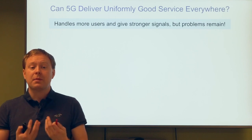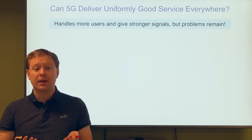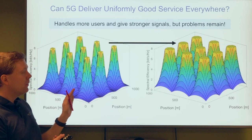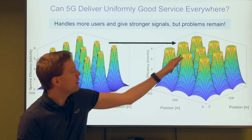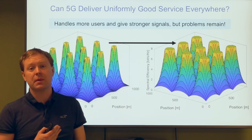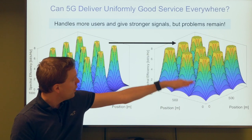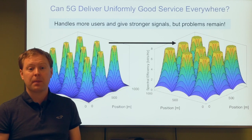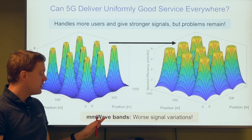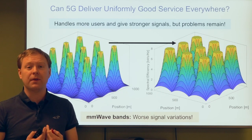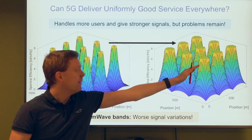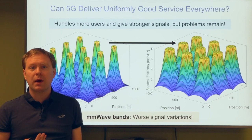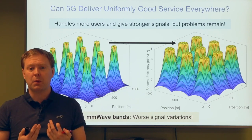Massive MIMO sends stronger, more narrowly directed signals, serving users at different locations while causing less interference to neighboring users or cells. But can massive MIMO deliver uniformly good service to everyone in the cell? It handles more users and provides stronger signals, but many problems remain. With massive MIMO we can extend the region of maximum spectral efficiency and improve performance across the cell, but large variations still exist. In 5G millimeter-wave bands — one of 5G's new features — cell-edge performance is actually worse because those signals don't propagate as well. So 5G improves for everyone, but doesn't provide uniformly good service.